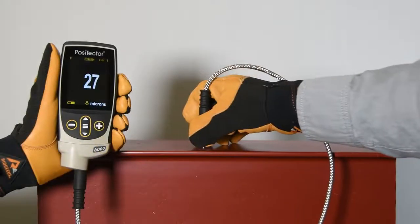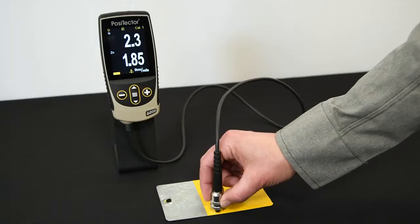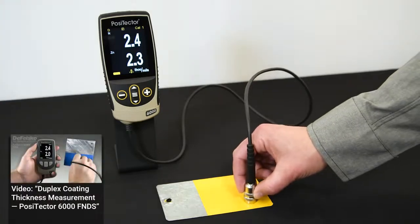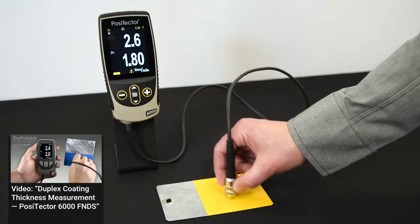Specialty probes are also available for measuring rough or hot coatings, and for simultaneously measuring zinc and paint thicknesses in duplex coating systems.